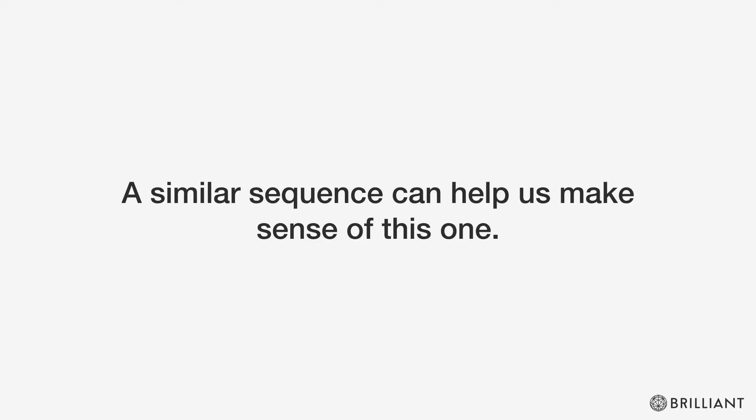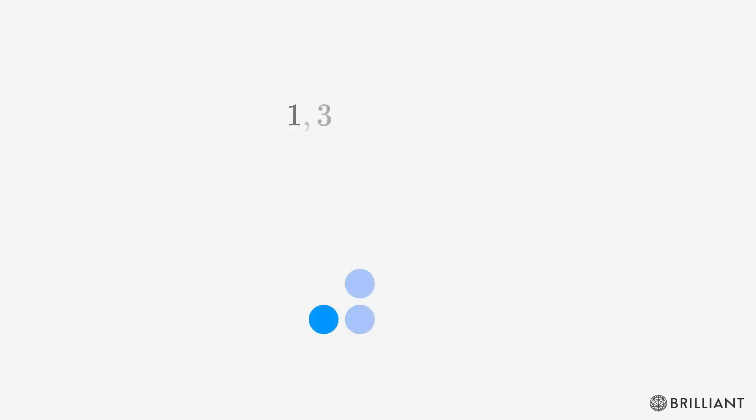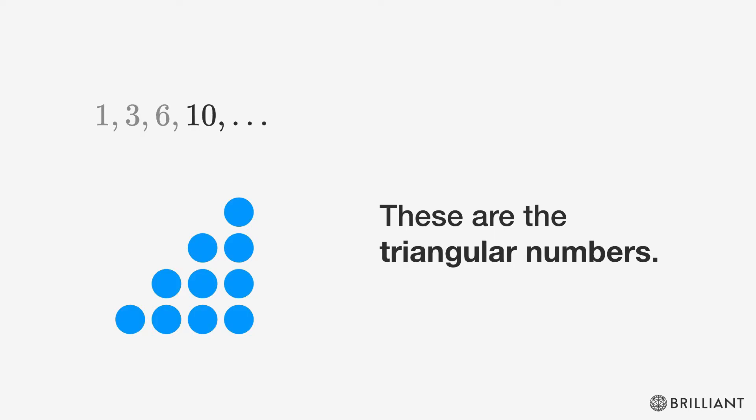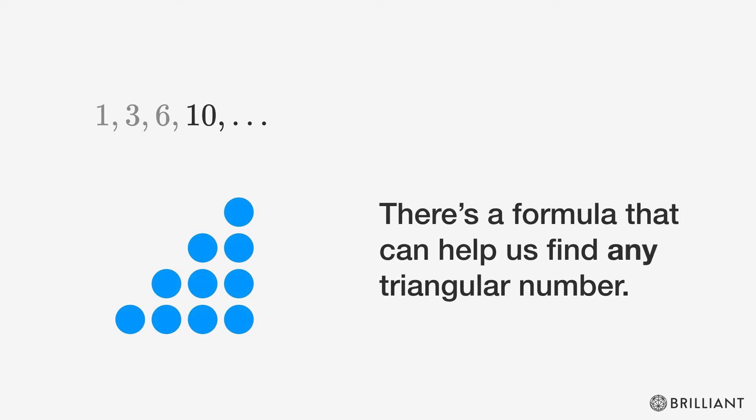A similar sequence can help us make sense of this one. 1, 3, 6, 10. We can represent these numbers in a triangle so it makes sense that they're called the triangular numbers. There's a formula that can help us find any triangular number.